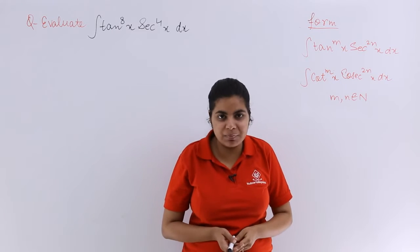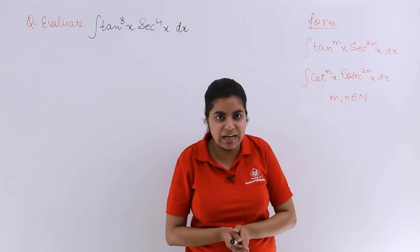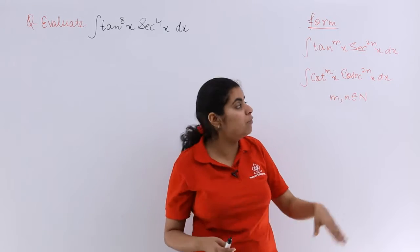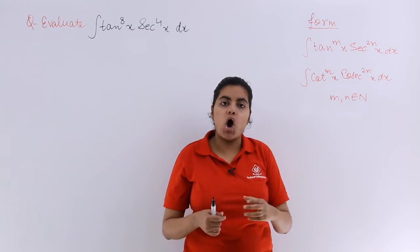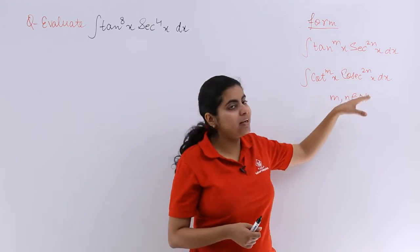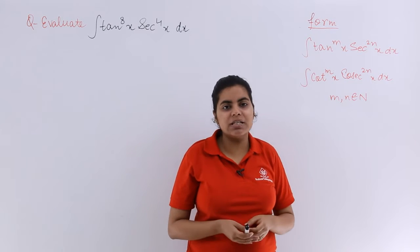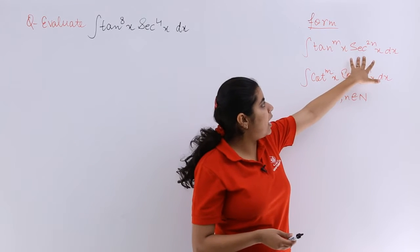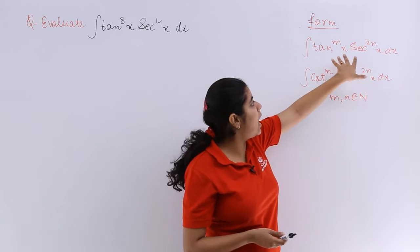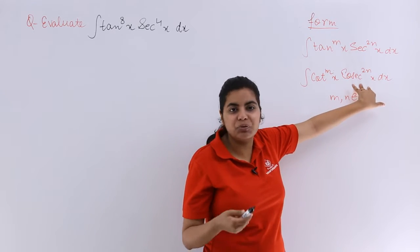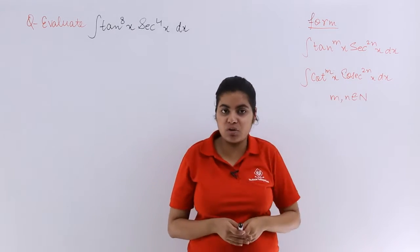So what is this kind of question meaning? The question would be such that there would be either the interplay of tangent and secant or the interplay of cot and cosecant, and the powers would be such that the power of secant would be half the power of tan, and here the power of cosecant would be half the power of cot.